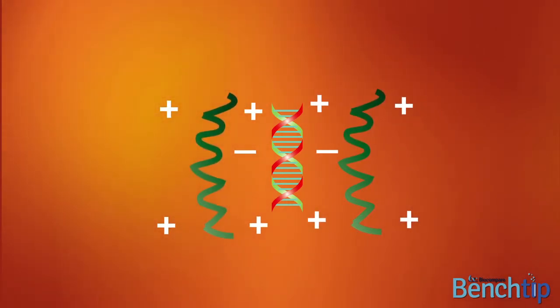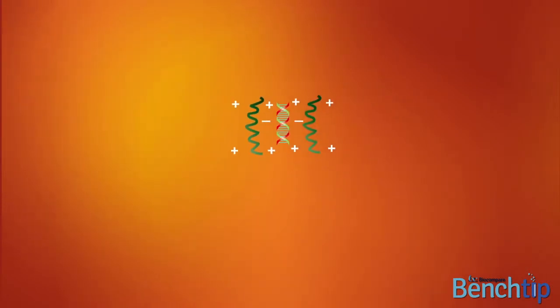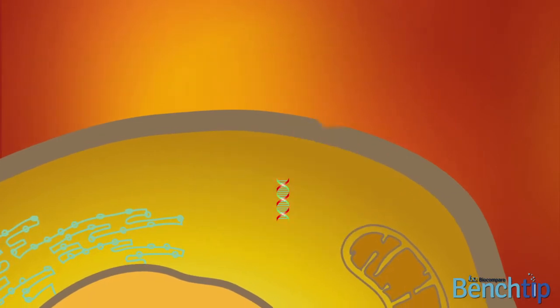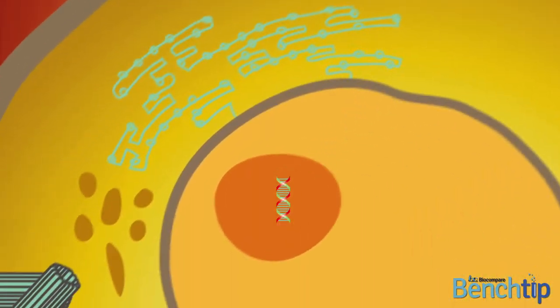This allows these transfection complexes to be taken up very efficiently via endocytosis and delivered to their respective functional locations: the cytoplasm and the nucleus.